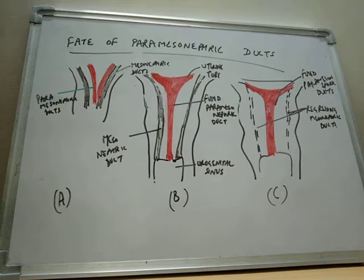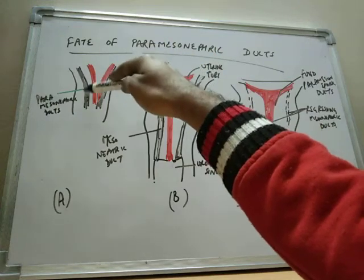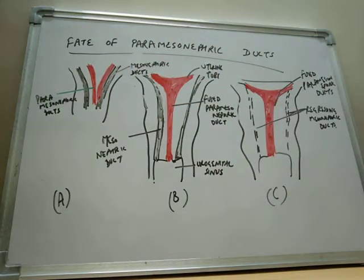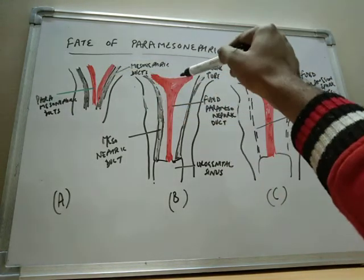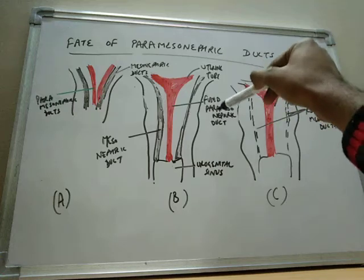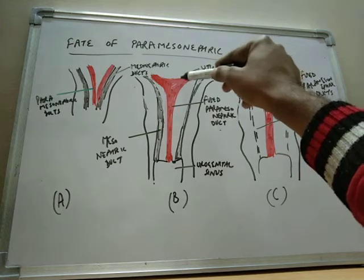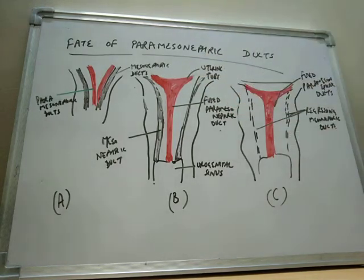The paramesonephric ducts are present in the intermediate mesoderm. They are shown in red color, while the black colored ones are the mesonephric ducts. The paramesonephric ducts form many structures. The first structure is the uterus — the paramesonephric ducts fuse, giving a fused portion and an unfused part.